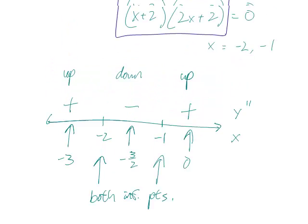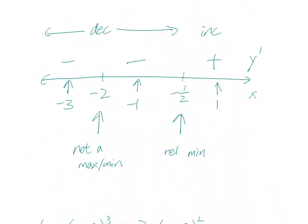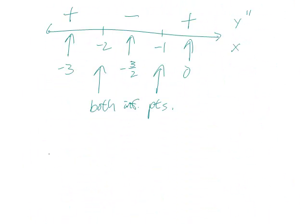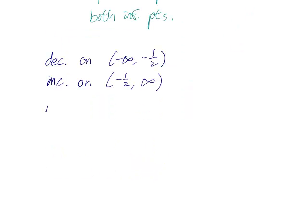The function is decreasing up to minus 1 half. So function is decreasing on negative infinity to minus 1 half. It's increasing on minus 1 half to infinity, which leads to a relative minimum at x equals minus 1 half.